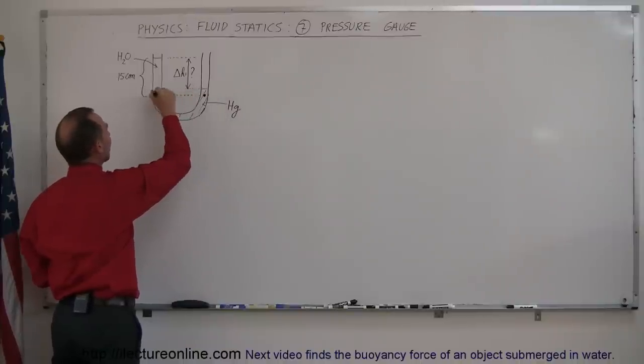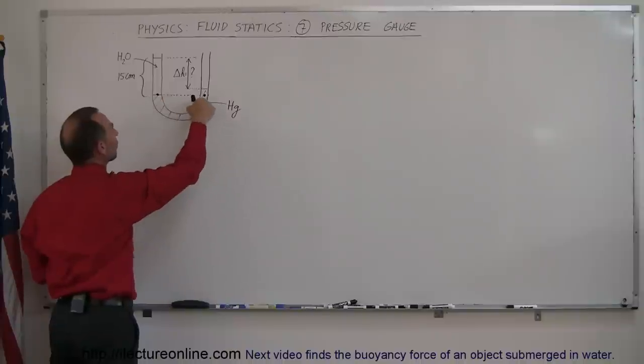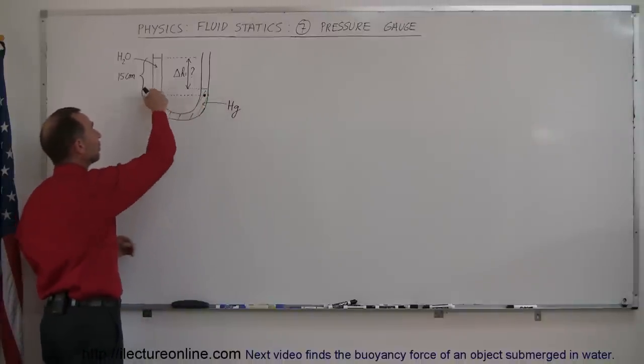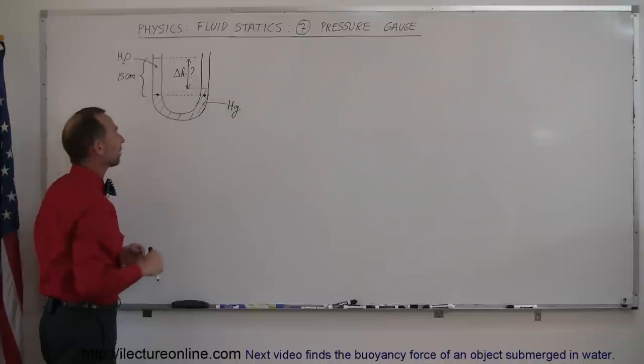I can say that the pressure at this location must equal the pressure at that location because there's nothing but mercury underneath all the way to one side and the other side. So I know that the pressure at those points are equal.